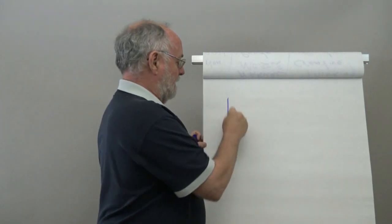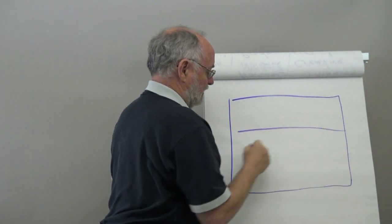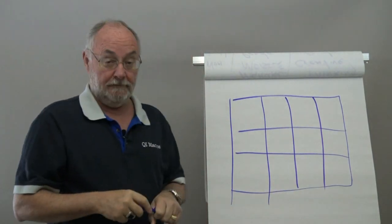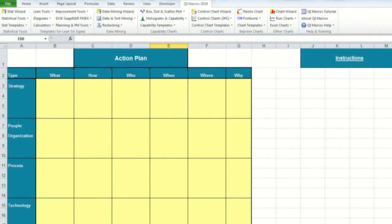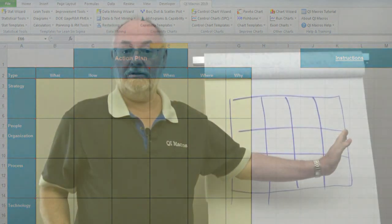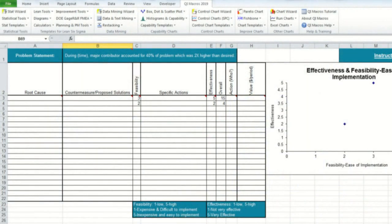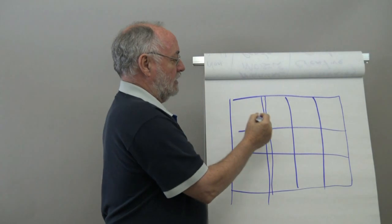A matrix diagram is essentially anything that's divided up into rows and columns. Now, these can be as simple as an action plan. It might be how you measure, put out your countermeasures and you prioritize them. So there might be some column for prioritizing things in some sort of fashion.